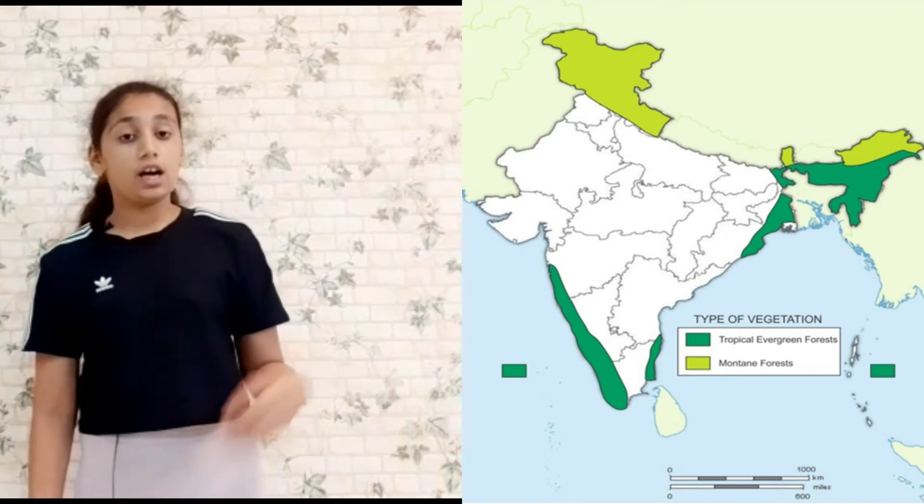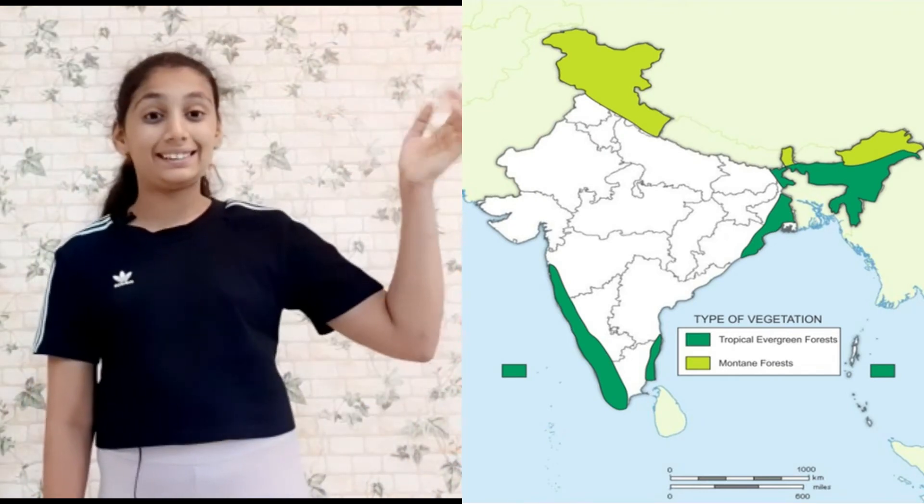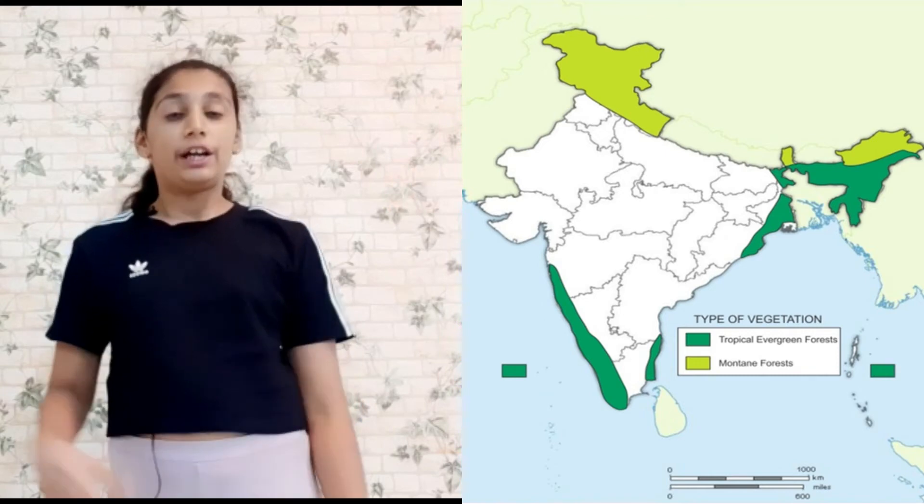Where are these tropical rainforests found? In India, they are found in some of the northeastern states like Assam and in the Western Ghats. Tropical rainforests are also found in Southeast Asia, Central America, and Central Africa. As I mentioned, the tropical rainforests' climate supports many species.